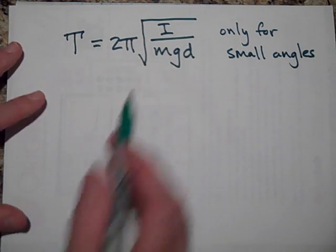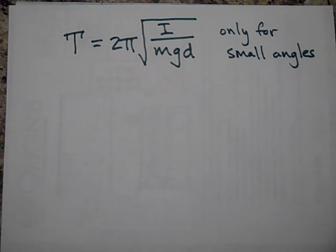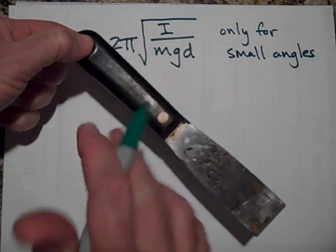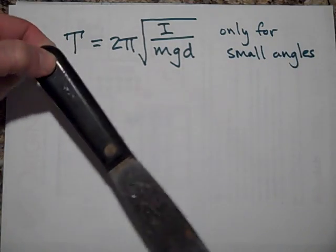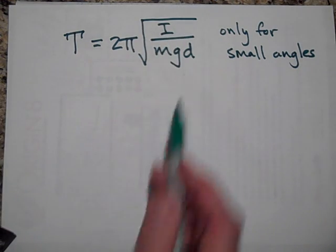I is the rotational inertia of the object about its axis. So like if this were the I, you'd want that I would be about this axis, the one that it's going around. So that's what that is. And you, a lot of times, use the parallel axis theorem for that.